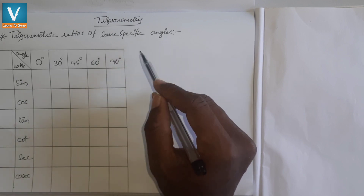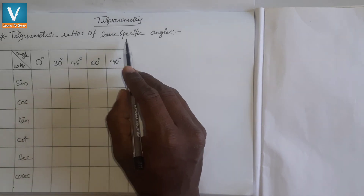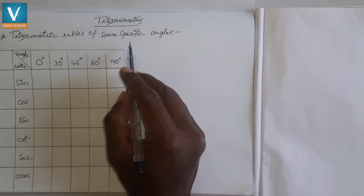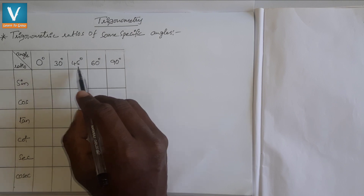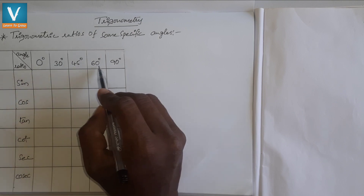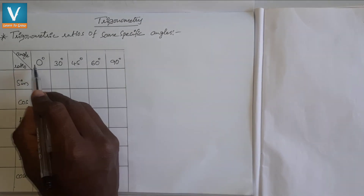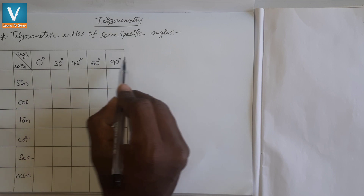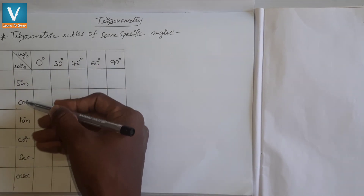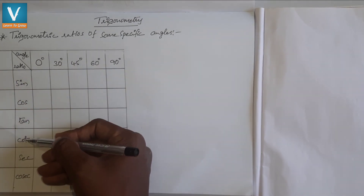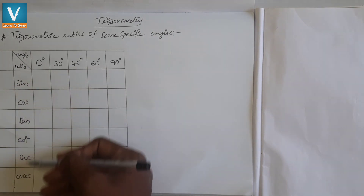This is the last topic of formulas. The specific angles we will cover are 0, 30 degrees, 45 degrees, 60 degrees, and 90 degrees. These angles are arranged horizontally, and the ratios — sine, cos, tan, cot, sec, cosec — are arranged vertically.